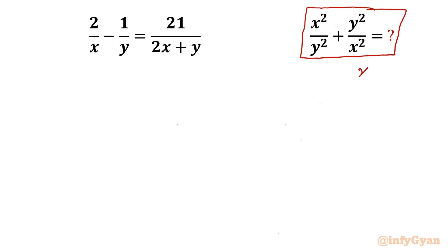Given that x cannot be equal to 0 as it is in the denominator, y cannot be equal to 0 as it is also in the denominator, and y cannot be equal to minus 2x also.